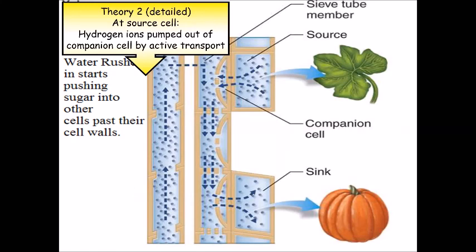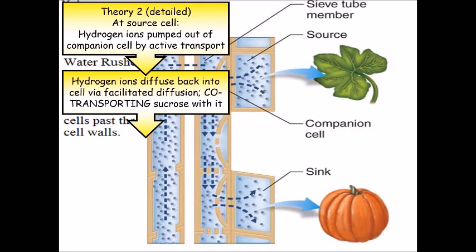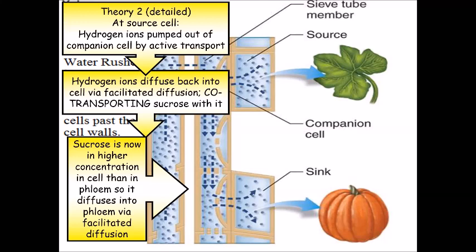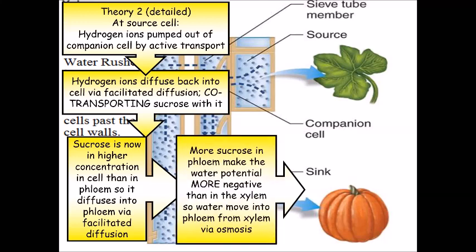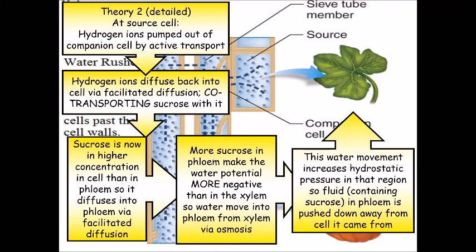So I've created a flow diagram to help with this. It's quite a detailed thing so the first stage there is the hydrogen ions being pumped out, second stage is the co-transport back in with the sucrose, then you've got the higher concentration of cells so the facilitated diffusion. This then changes the water potential, makes it more negative so water moves into the phloem.